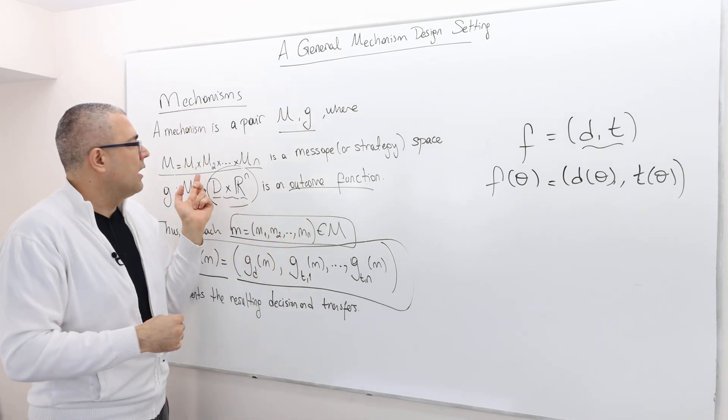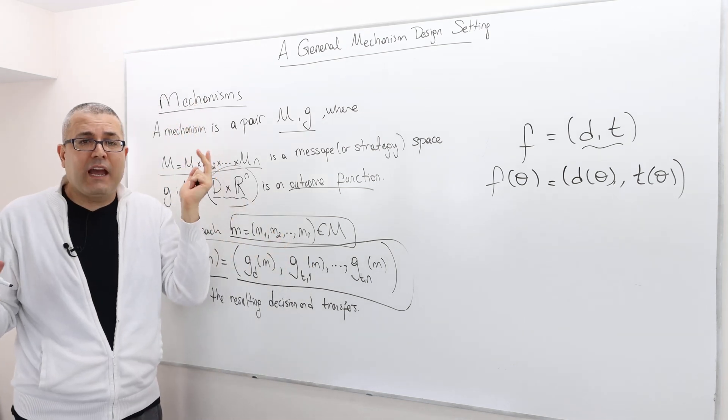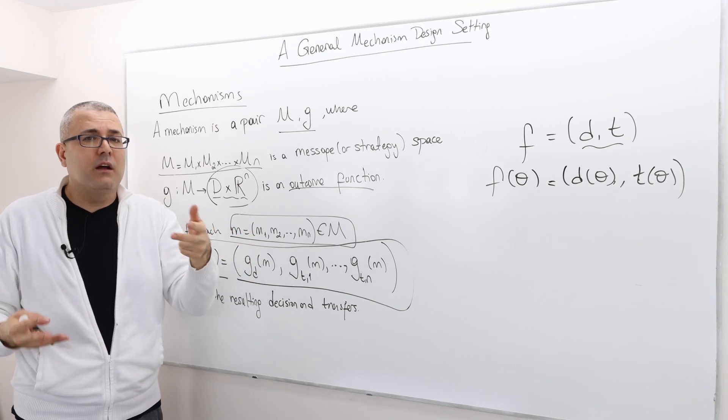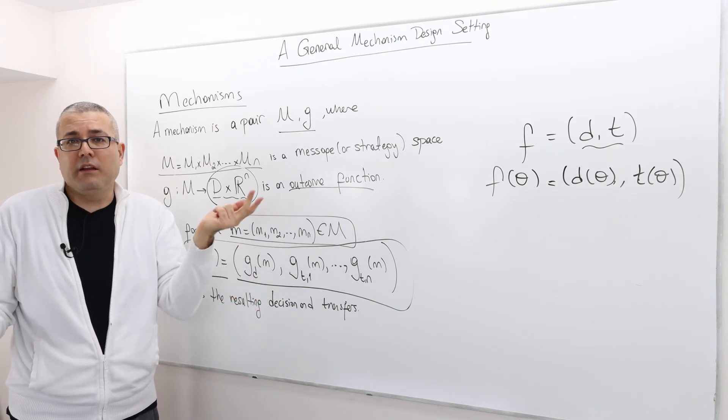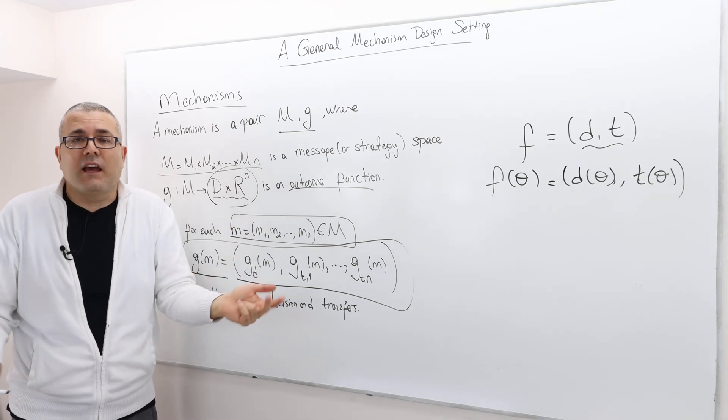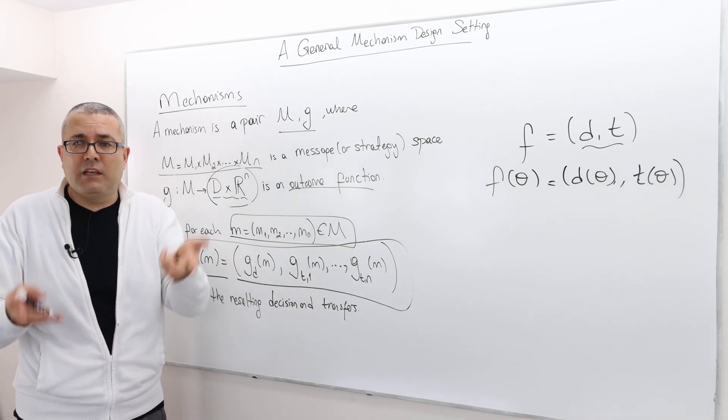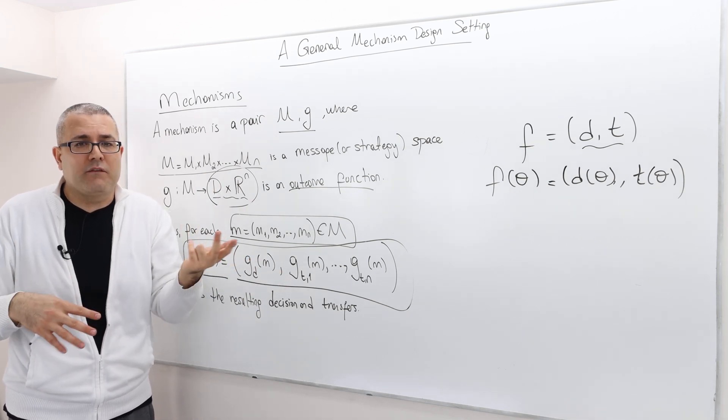Meaning, in some games, you can actually just ask people, what is your true type, right? I mean, it's possible. You can ask that in some environments, it can be an optimal mechanism in some environments. It's not.